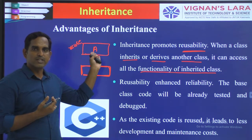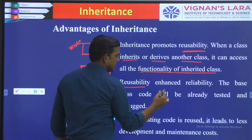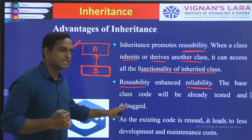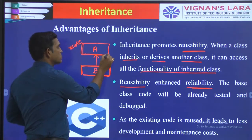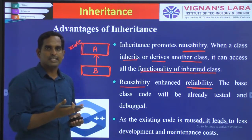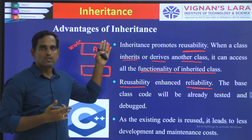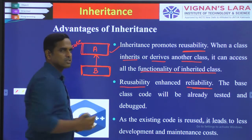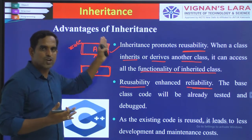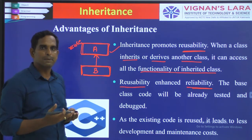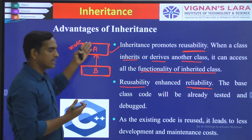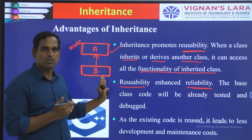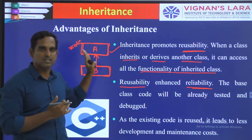The reusability enhances reliability. The base class code will be already tested and debugged — no errors will be present in that particular code. You need not recheck everything whenever you are creating the inheritance part. Whatever new system you create from the already existing class will be more reliable compared to what you write from scratch. If you rewrite everything, there is a chance of getting errors into the code. When you reuse the code, your code will be more robust with fewer errors.